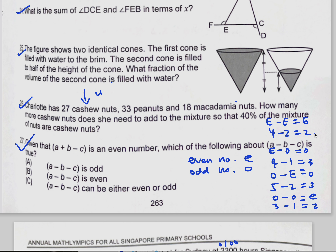You can actually give yourself simple examples on the spot. So over here, looking at this minus c to get even — what are the possible combinations? A plus B can only be even minus even, or odd minus odd, to get even.